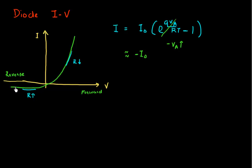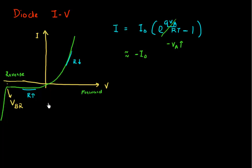But if I keep on increasing my reverse voltage, what this reverse bias current does, instead of remaining constant, it remains constant for a large range of voltage and then suddenly it shoots up. This current rises very sharply at this particular voltage, and this particular voltage is what is called the breakdown voltage, denoted by V subscript BR, denoting breakdown voltage.